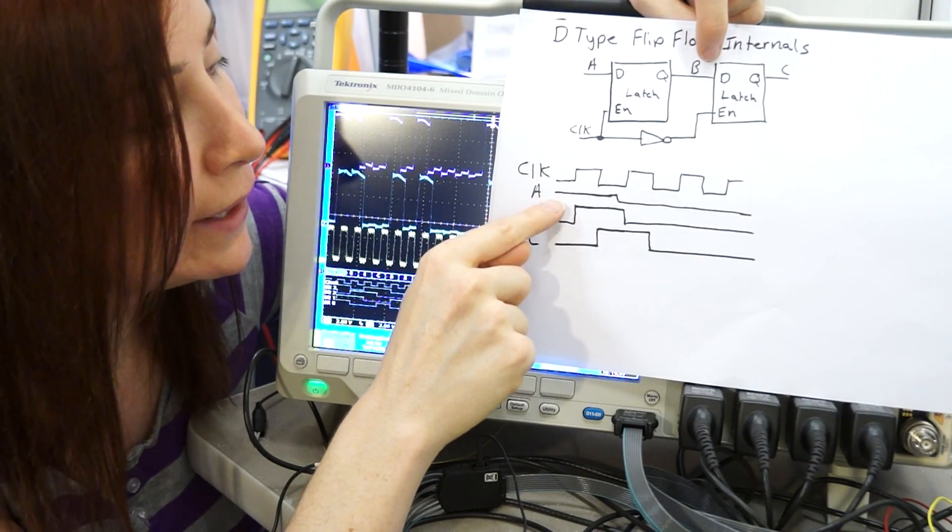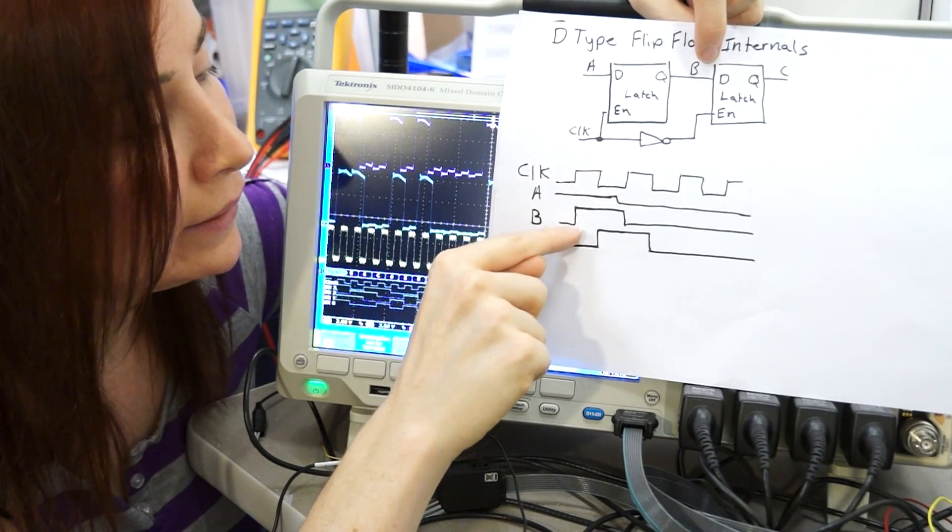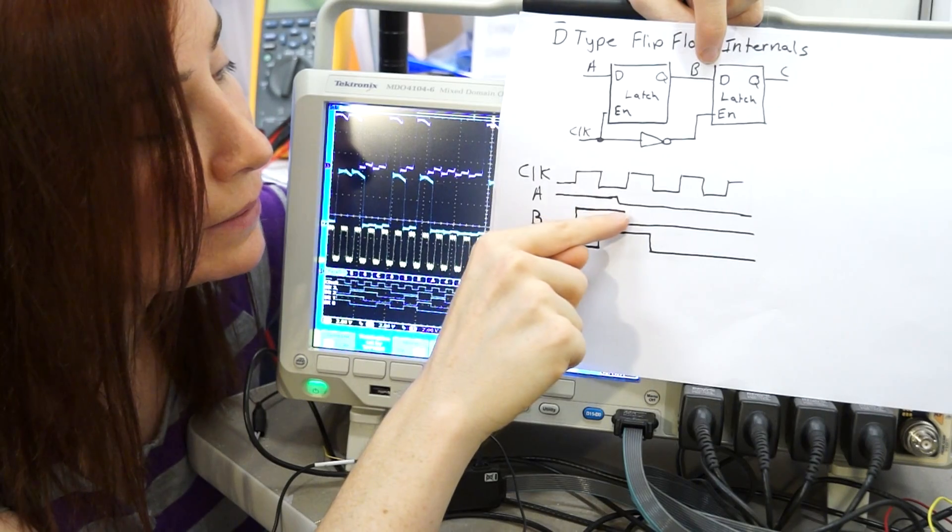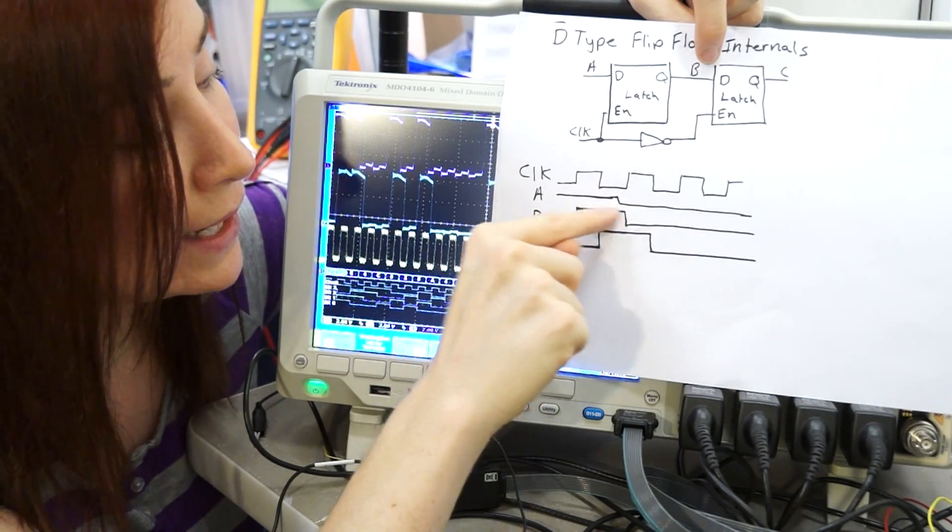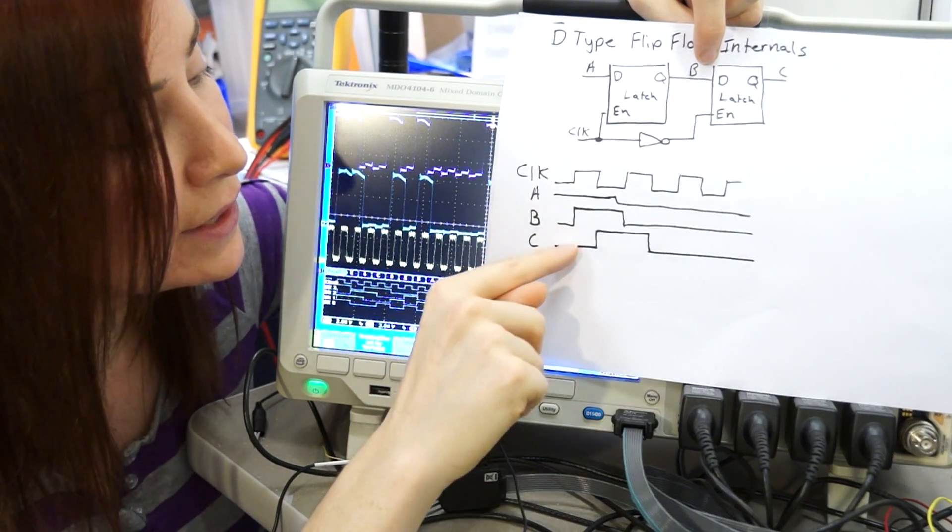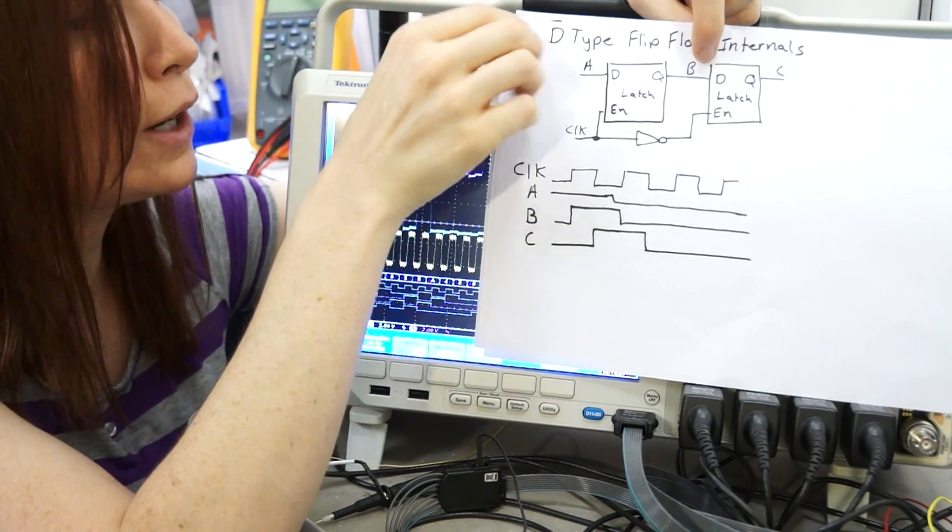And we can see it in the timing diagram here. Bit is present on the input. Clock goes high, transfers directly through the register into the B state node, and then the clock will flip, the inverter causes that one to open up, and then it will go to the output, node C or your Q output.